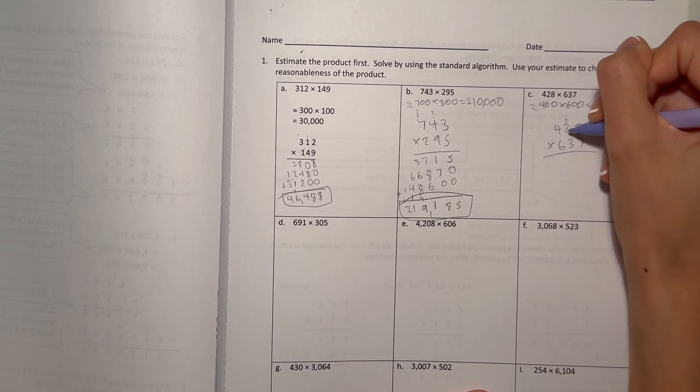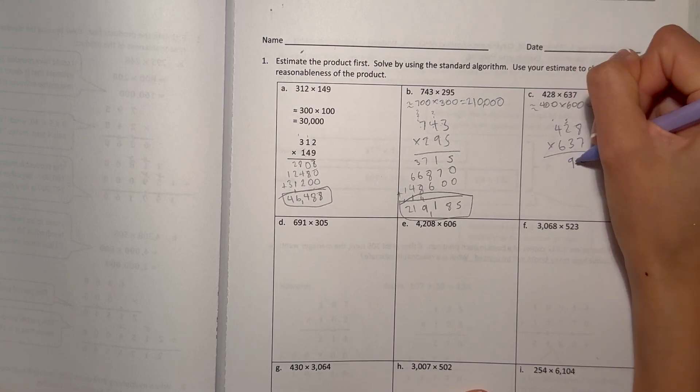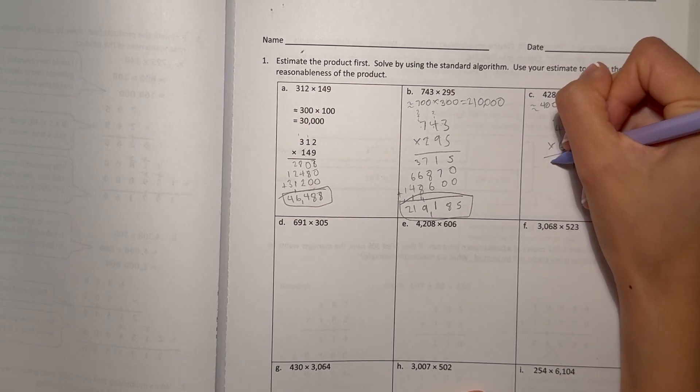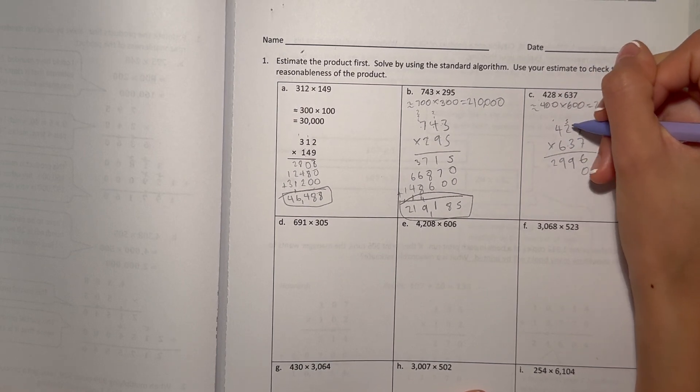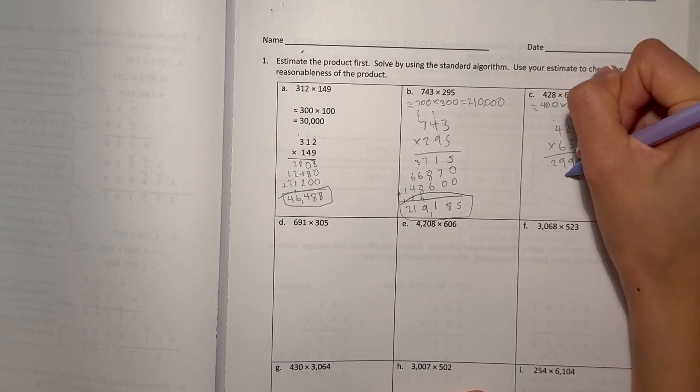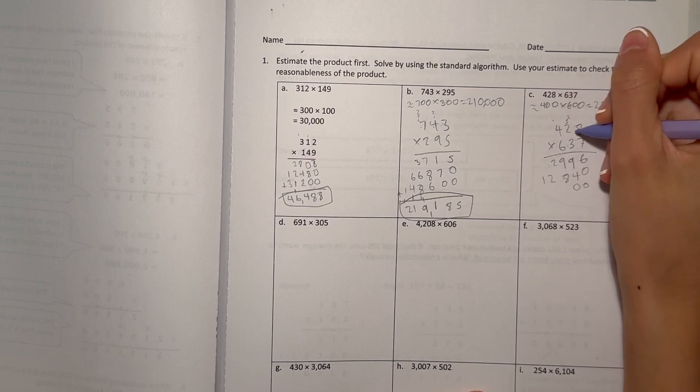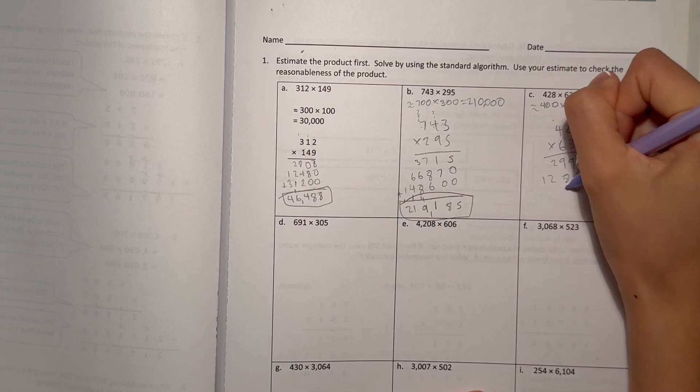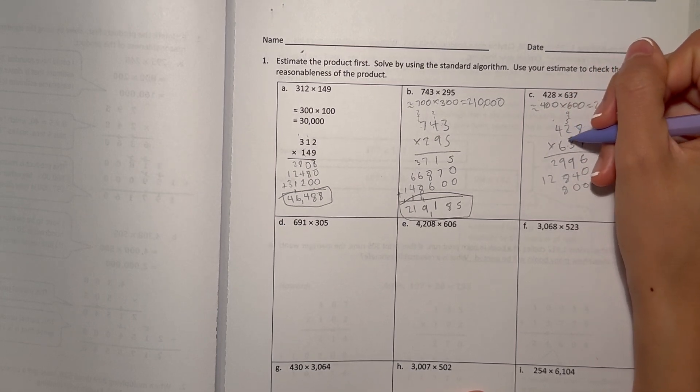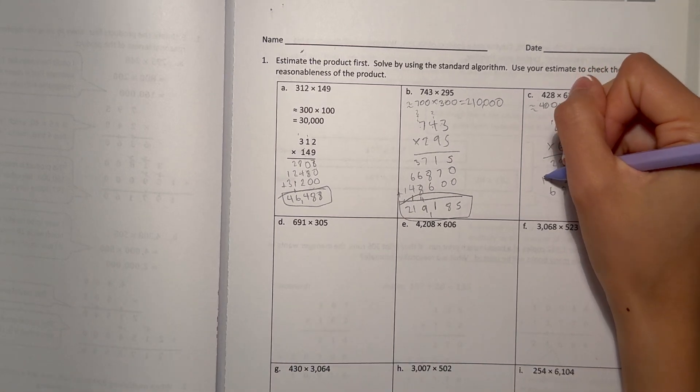8 times 7 is 56. 2 times 7 is 14, plus 5 is 19. 4 times 7 is 28, plus 1 is 29. 0. 8 times 3 is 24. 3 times 2 is 6, plus 2 is 8. And 3 times 4 is 12. Now 0, 0. 6 times 8 is 48. 6 times 2 is 12, plus 4 is 16. And 6 times 4 is 24, plus 1 is 25.